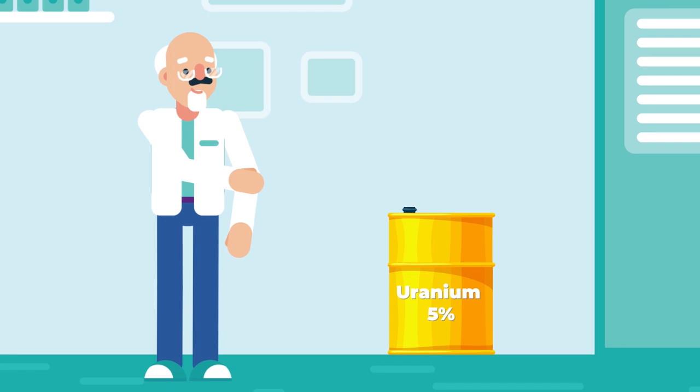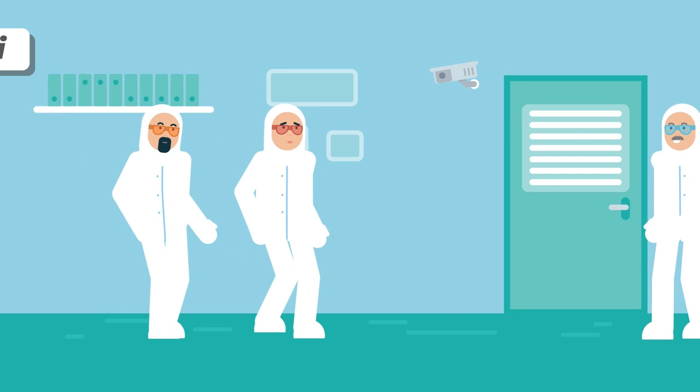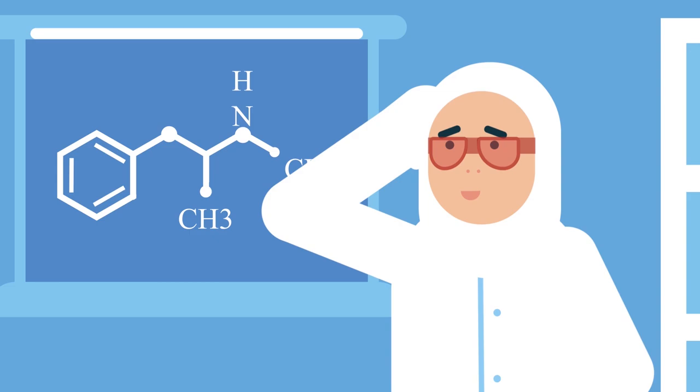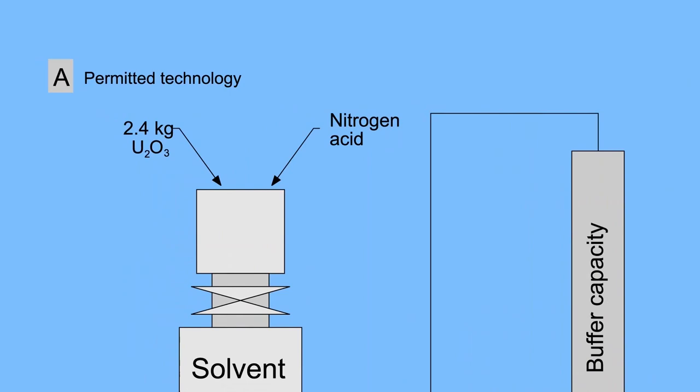On September 30, 1999, around 10am, three plant employees - Yutaka Yokokawa, Masato Shinohara, and Hisachi Auchi - were preparing to convert highly enriched uranium. This was the first time JCO had processed highly enriched uranium in three years. The resulting fuel was intended for use in the JoYo Experimental Fast Breeder Reactor at the Orai Research Establishment. It's important to mention that working with high-risk substances requires compliance with the safety requirements established by Japan's Science and Technology Agency.